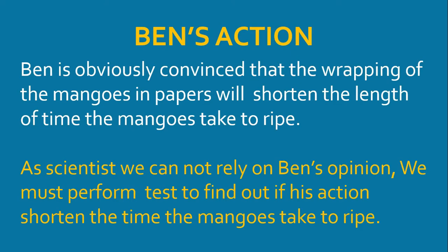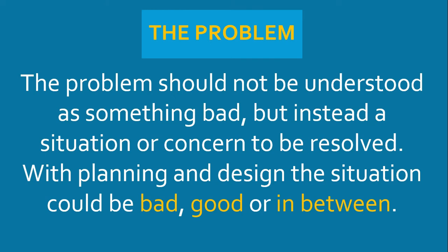Ben's action has obviously convinced him that wrapping mangoes in paper will shorten the length of time the mangoes take to ripen. As scientists, we cannot rely on Ben's opinion. We must perform tests to find out if his action shortens the time the mangoes take to ripen. The problem should not be understood as something bad, but instead a situation or concern to be resolved. With planning and design, the situation could be good, bad, or in between — it is just an observation or concern that we need scientific facts to arrive at the answer.